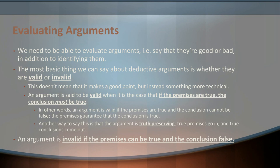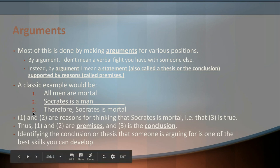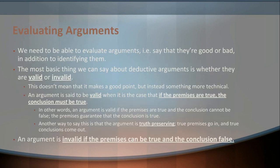Going back to our example: if premises one and two are both true — if it's true that all men are mortal and it's true that Socrates is a man — it's impossible for Socrates to not also be mortal. This is an example of what we call a valid argument. Another way of describing this is that it's truth-preserving. So long as the premises are true, it'll guarantee the truth of the conclusion — valid arguments are basically a process of preserving truth from premise to conclusion.